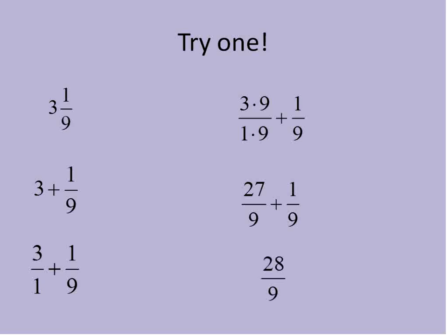So go ahead and give one a try. Try this one out following those steps. We use three and one ninth. That's the same as saying three plus one ninth, or three over one plus one over nine. Now we'll convert three over one to having the denominator of nine. We do that by multiplying both the numerator and the denominator times nine. Three times nine is twenty-seven. One times nine is nine. And now we'll add twenty-seven plus one is equal to twenty-eight. So three and one ninth is the same as saying twenty-eight over nine. They're the same.